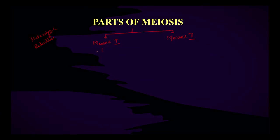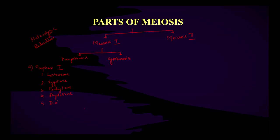In meiosis 1, there are two parts: karyokinesis and cytokinesis. Karyokinesis consists of prophase 1, which has five sub-phases: leptotene (leptonema), zygotene, pachytene, diplotene, and diakinesis. Then metaphase 1, anaphase 1, and telophase 1.